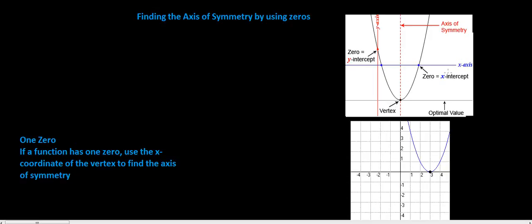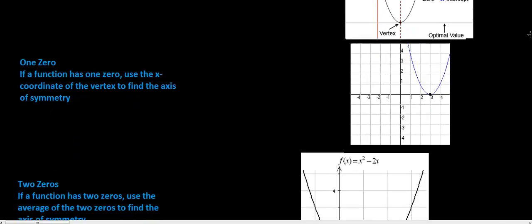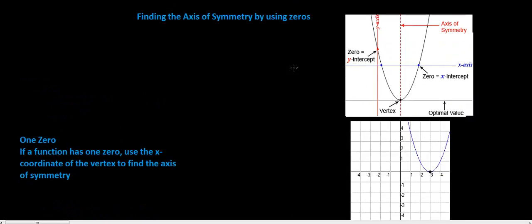And we can use our zeros to help us find it. Now if you've got one zero, and here's a little picture of it, that's your axis of symmetry, this U-shaped thing. That's your parabola. And this axis of symmetry goes right through your vertex.